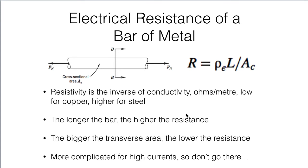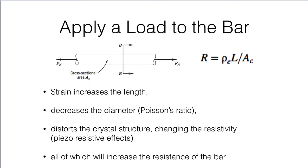Now, if we have a bar of metal and we stretch it, its resistance is going to change. It's going to change for multiple different reasons. One is if we make the bar longer, the resistance is going to be higher. If we make the bar narrower, smaller transverse area, the resistance is going to be higher. Or if it's bigger, the resistance is going to be lower. And so we can apply that technique. If we apply a load to the bar, then we'll have strain increasing the length and decreasing the diameter due to Poisson's ratio, and it's going to distort the crystal structure, changing the resistivity. So you'll have piezo-resistive effects. And all of those are going to increase the resistance of the bar if we stretch it or decrease the resistance of the bar if we compress it.